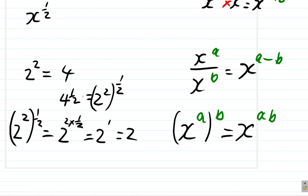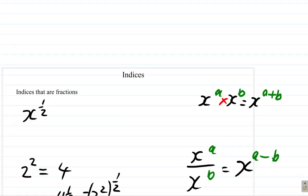What we're finding out is that 2 squared is 4. So 4 is what we're raising to the power of a half, and we see that it's 2. So 4 to the half equals 2.